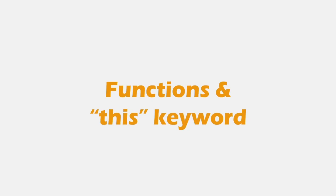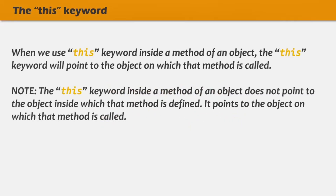In the last lecture, we learned about the this keyword in brief and we understood what this keyword refers to when we use it inside a method of an object. We learned that when we use this keyword inside a method of an object, this keyword will point to the object on which that method is called, not the object inside which that method is defined.